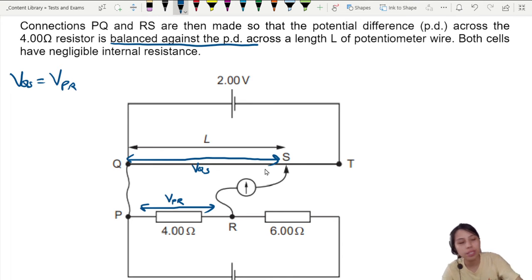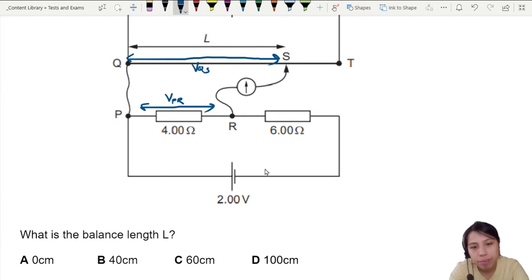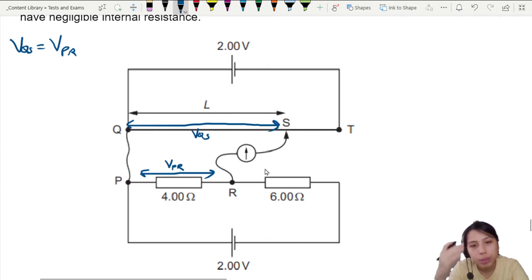If you've never tried potentiometer questions before, you will find this quite mind-boggling. What are we supposed to find? What is length L? How do we start? Maybe we start with this. Can we find VPR? I think we can. You see these two volts? These two volts is part of this whole circuit.